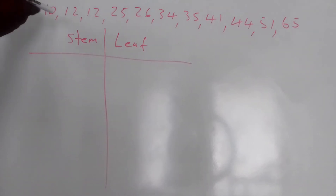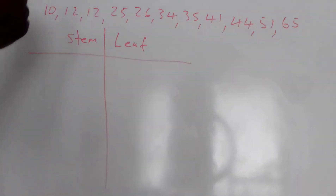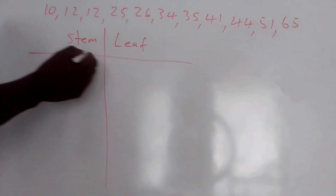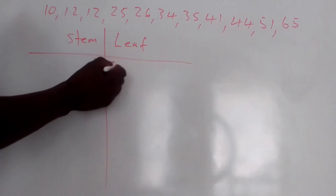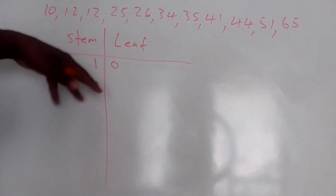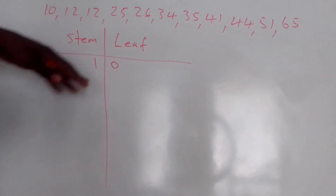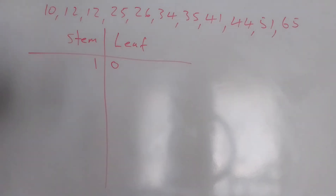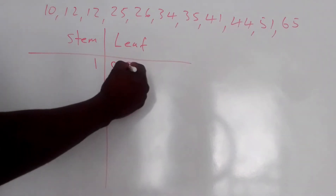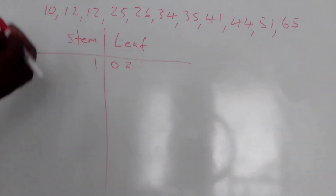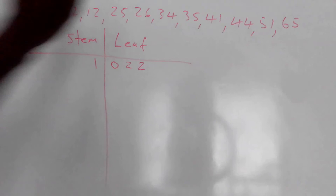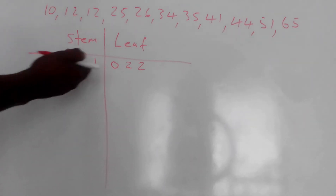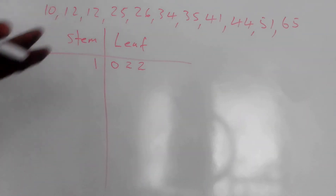I want to write 10 here. Since under the stem I put the tens value, I'm going to put 1. And for the leaf, I'm going to put 0 — so this represents 10. For 12, I put 2 under the leaf. There's another 12, so I write another 2 under the leaf — I already have 1 on the stem so I don't need to write another. So far I have 10, 12, 12 — three numbers.